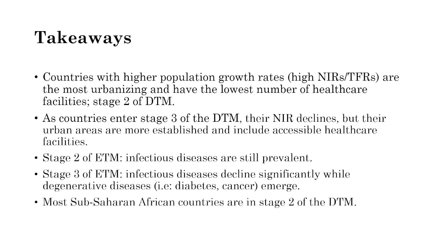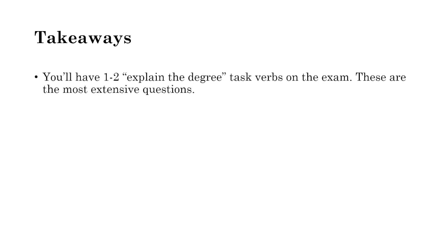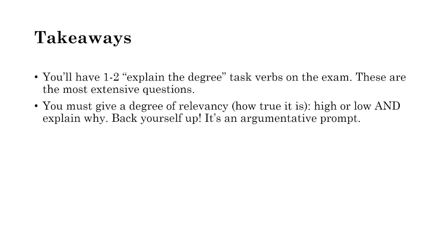Most Sub-Saharan African countries are in stage 2 of the DTM, though some — like Nigeria, South Africa, and Egypt — are in stage 3. You'll have one to two explain-the-degree prompts on the entire AP exam. These are supposed to be the most extensive questions. You need to give a degree of relevancy — state how true it is, either high or low — and since it's an argumentative prompt, you must back yourself up with sentences explaining why. If you feel strongly it's a high degree, you should have an easy time backing yourself up.